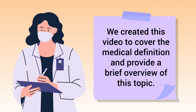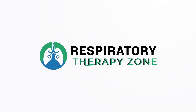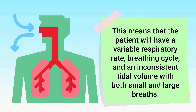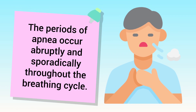The ataxic respiratory pattern is characterized by irregular breathing with abnormal pauses and periods of apnea. The patient will have a variable respiratory rate, breathing cycle, and an inconsistent tidal volume with both small and large breaths. The periods of apnea occur abruptly and sporadically throughout the breathing cycle.